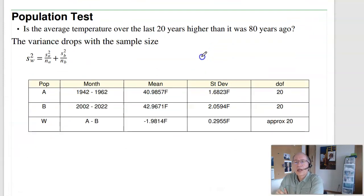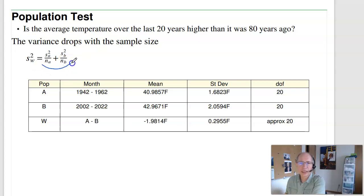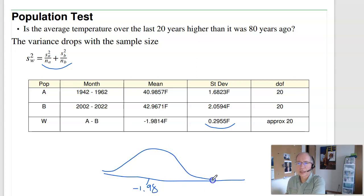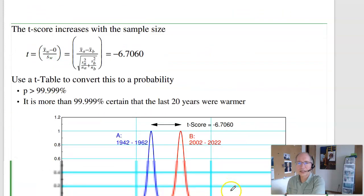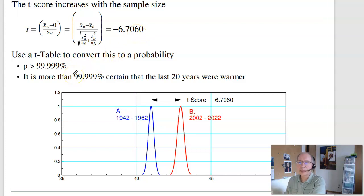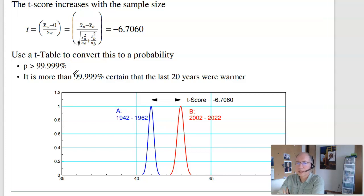For the population test — on average, is Fargo getting warmer? When dealing with populations, the variance drops by the sample size, giving a variance of 0.29. So what I'm looking at is minus 1.98 degrees, which is quite a few standard deviations from zero. The t-score is 6.7 standard deviations — basically 99.999% or more. So I know more about populations than individuals: any given year might be warmer in the first 20 years, but with 21 years of data, I can say with almost certainty that Fargo is getting warmer. The difference is statistically significant.